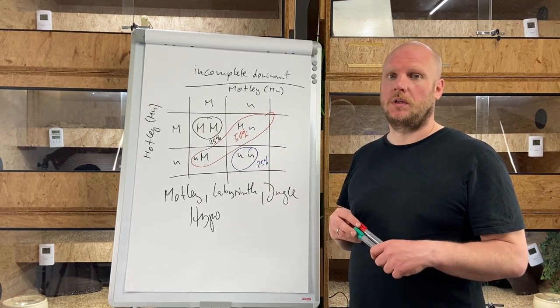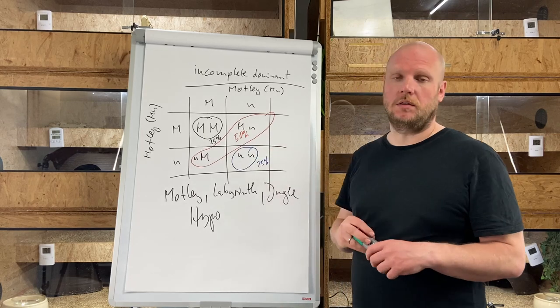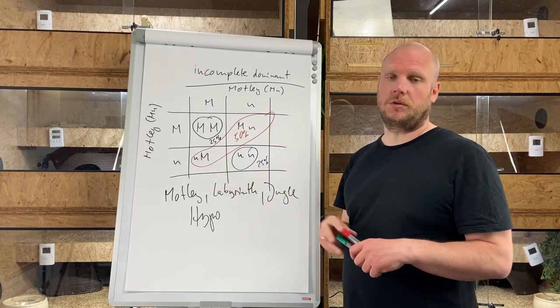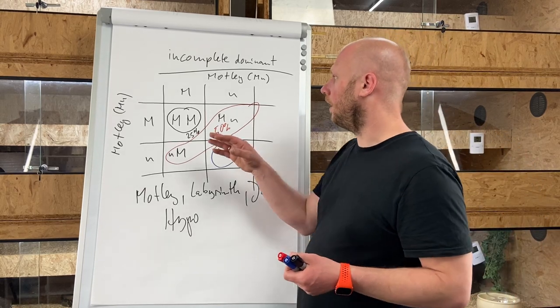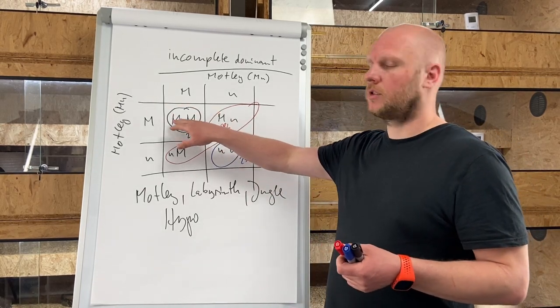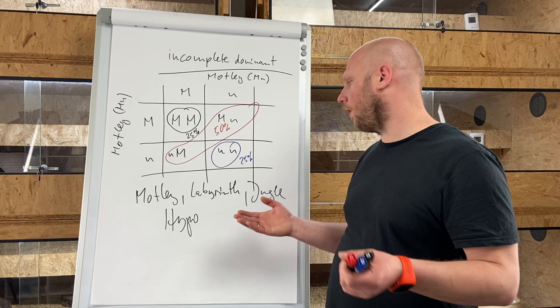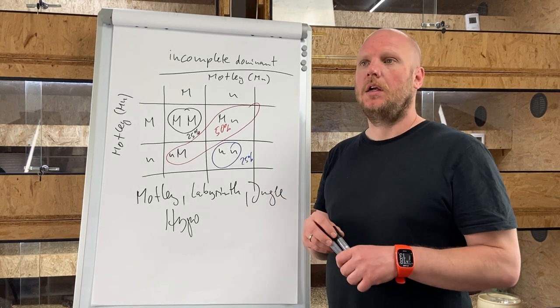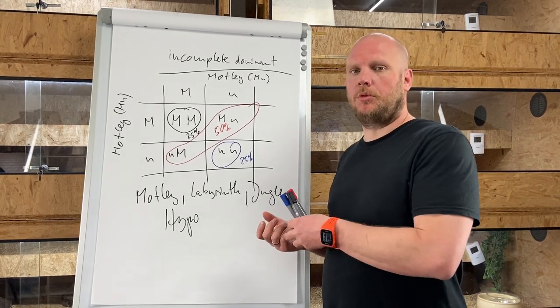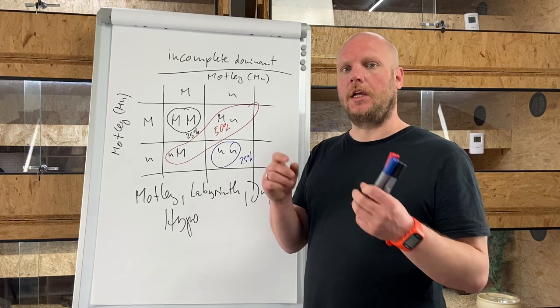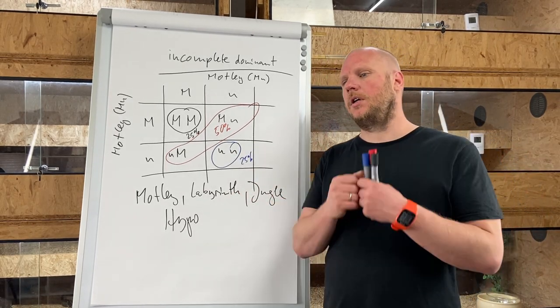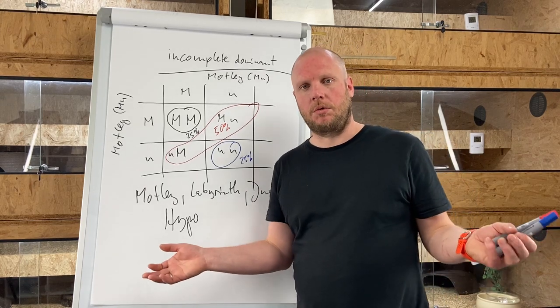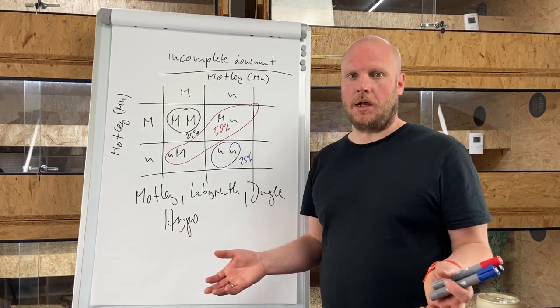It's interesting because a super animal like a super hypo, for example, only produces hypo babies. So if you are breeding a super hypo to a wild type animal, you receive a complete litter out of hypo animals.